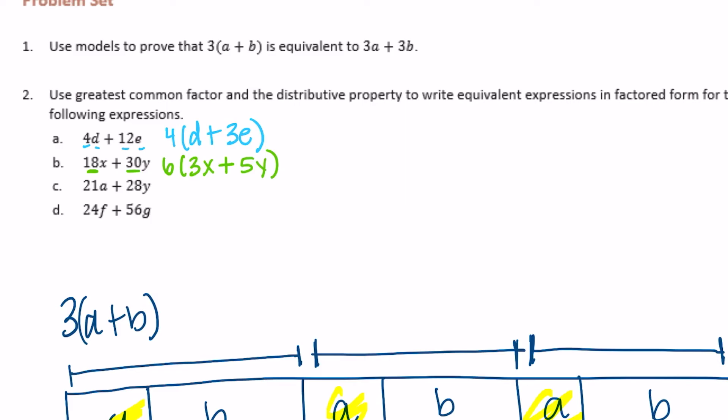C, 21a plus 28y. 21 and 28. Their greatest common factor would be 7. 21 divided by 7 would be 3a. So we have 7 times 3a plus 4y.